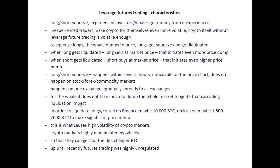When a squeeze happens on one exchange it gradually spreads to all other exchanges. It doesn't take much for a whale to dump the whole crypto market and ignite a cascading reaction. They manipulate the market because they want to accumulate cheaper Bitcoin. It is believed that to liquidate long positions on the Bitcoin market it is necessary to sell about 10,000 Bitcoins on Binance, while on Kraken only 1,500 to 2,000 Bitcoins are necessary to create a significant price dump.